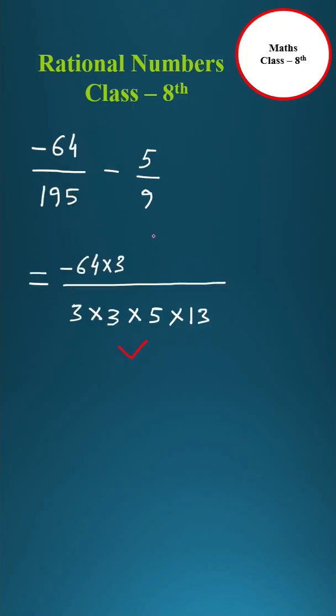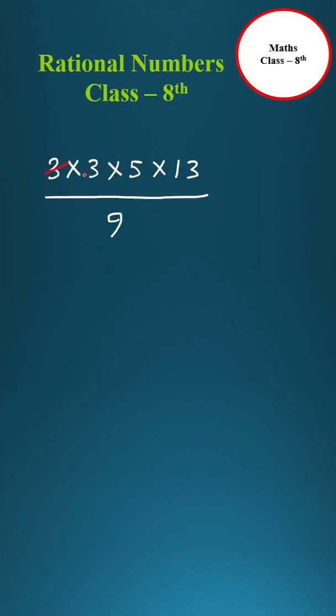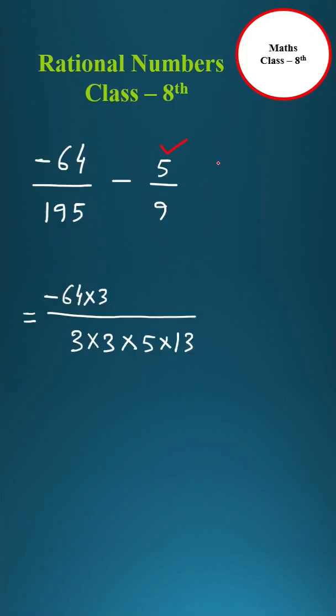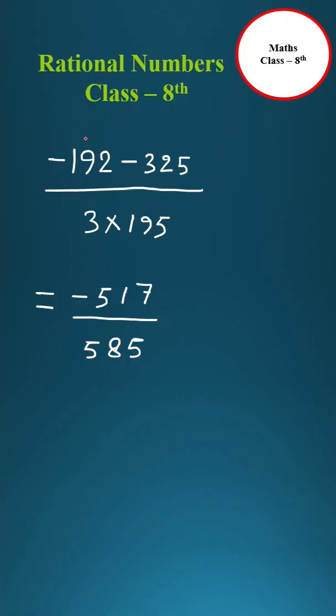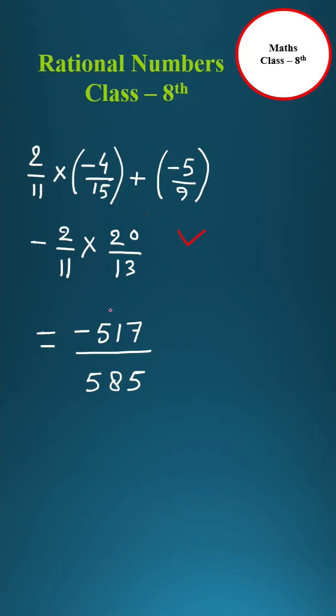Now divide this LCM by 9. 3 into 3 is 9, 9 cancelled, so 5 into 13, 65 is left. Multiply this 65 with 5. Minus 64 into 3 is minus 192, then minus 5 into 65 is 325. In the denominator this 3, this 3, then 3 into 5 is 15, into 13 is 195. Minus 192 minus 325 is minus 517, in the denominator 3 into 195 is 585. So this is equal to minus 517 upon 585 is the answer.